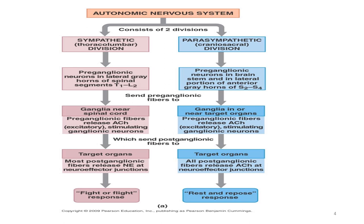Preganglionic fibers are sent to the paravertebral ganglia near the spinal cord. Preganglionic fibers release acetylcholine, providing excitatory stimulation to ganglionic neurons. Postganglionic fibers are then sent to the target organ. Most postganglionic fibers release norepinephrine at the neuroeffector junction, and due to this norepinephrine release, the fight-or-flight response occurs.